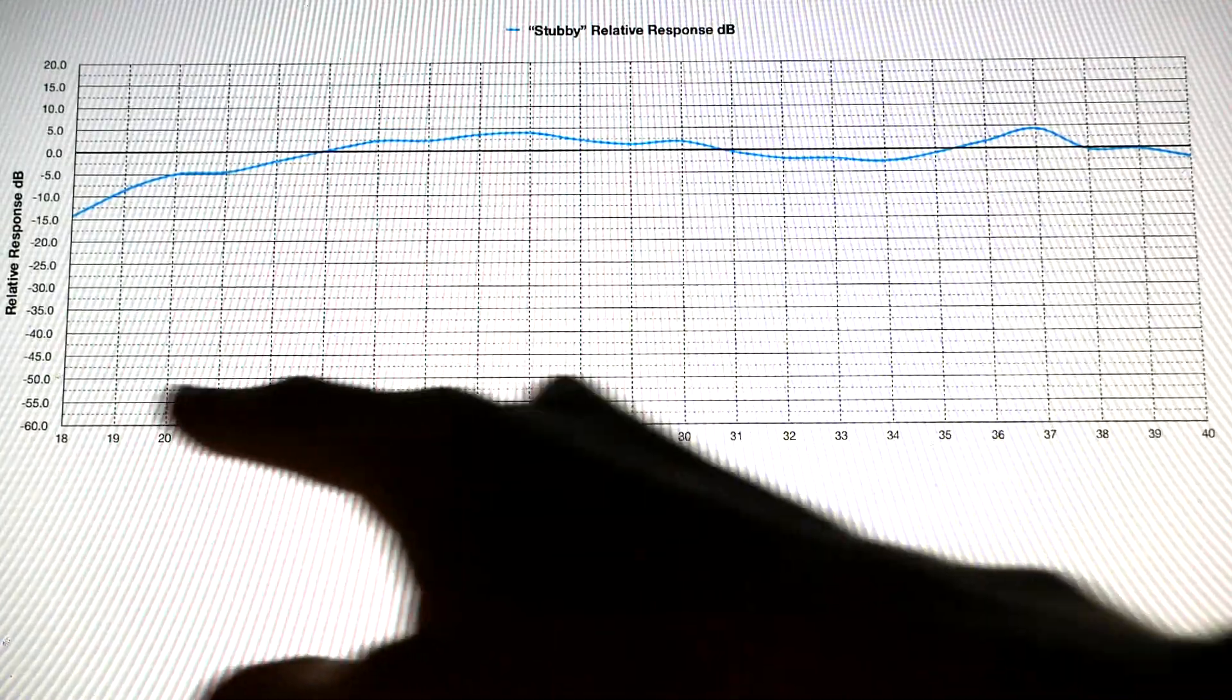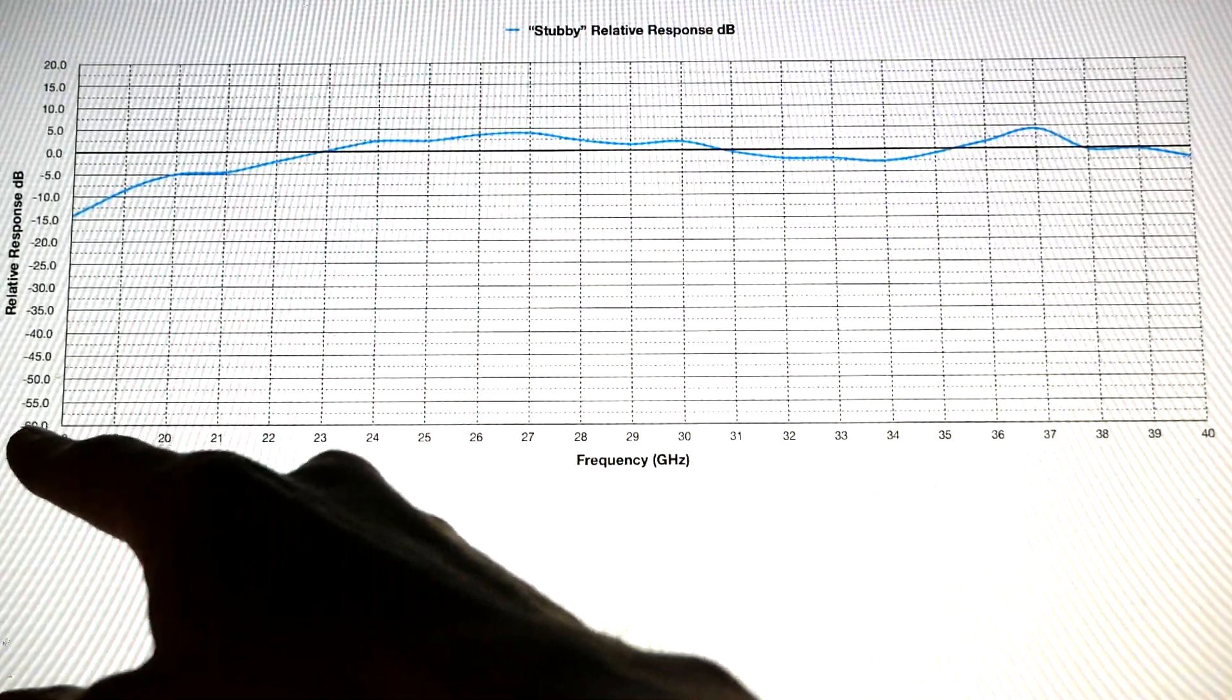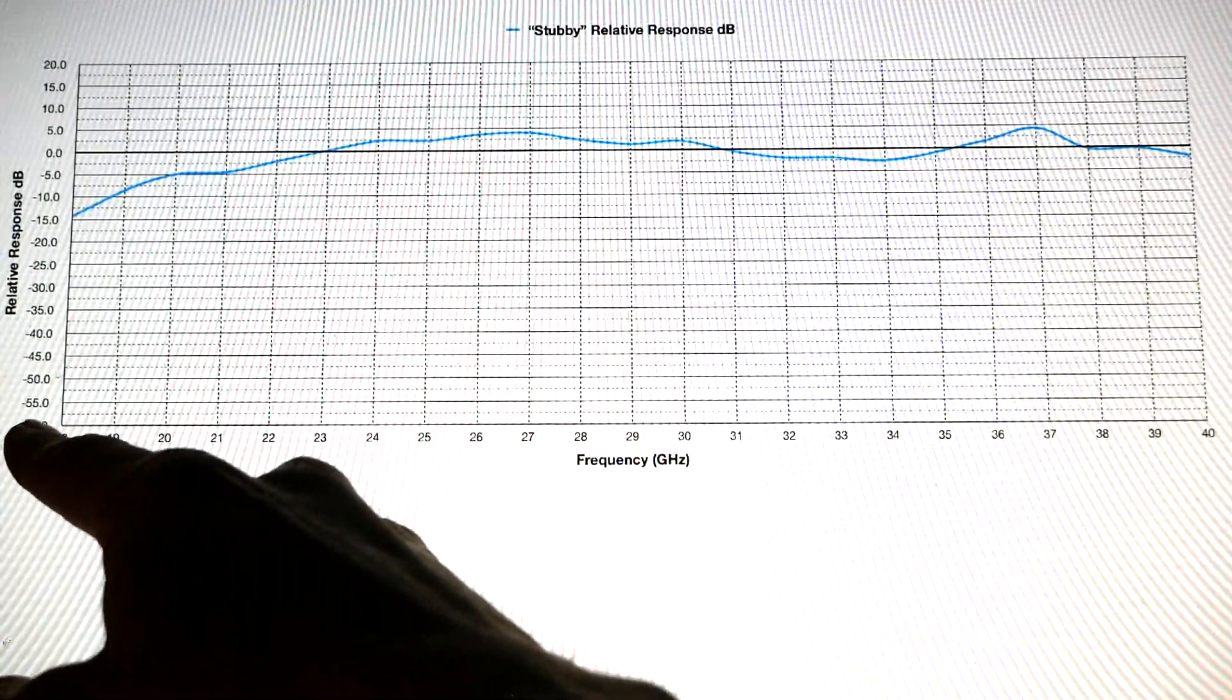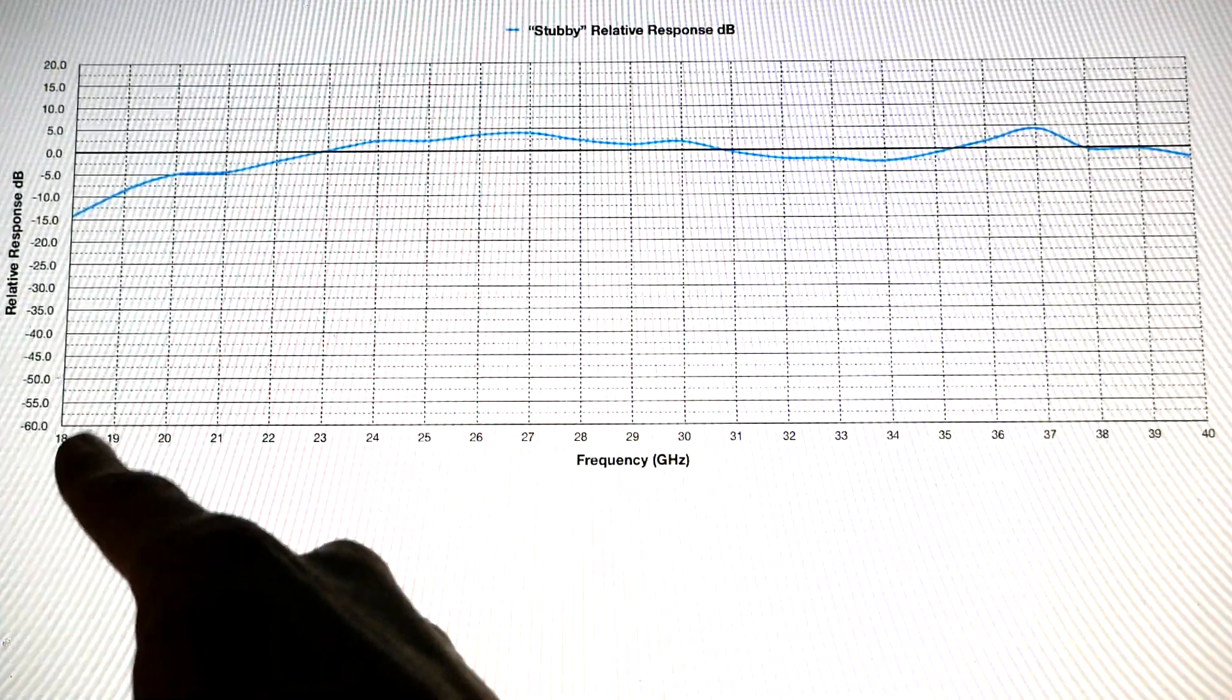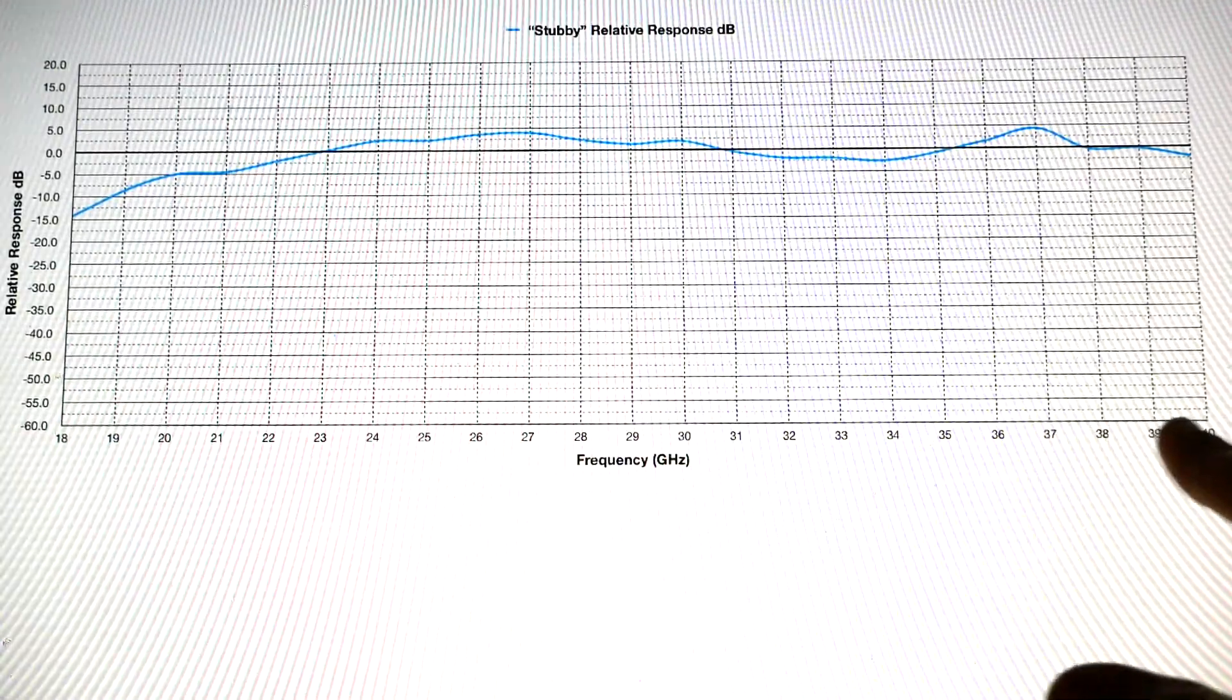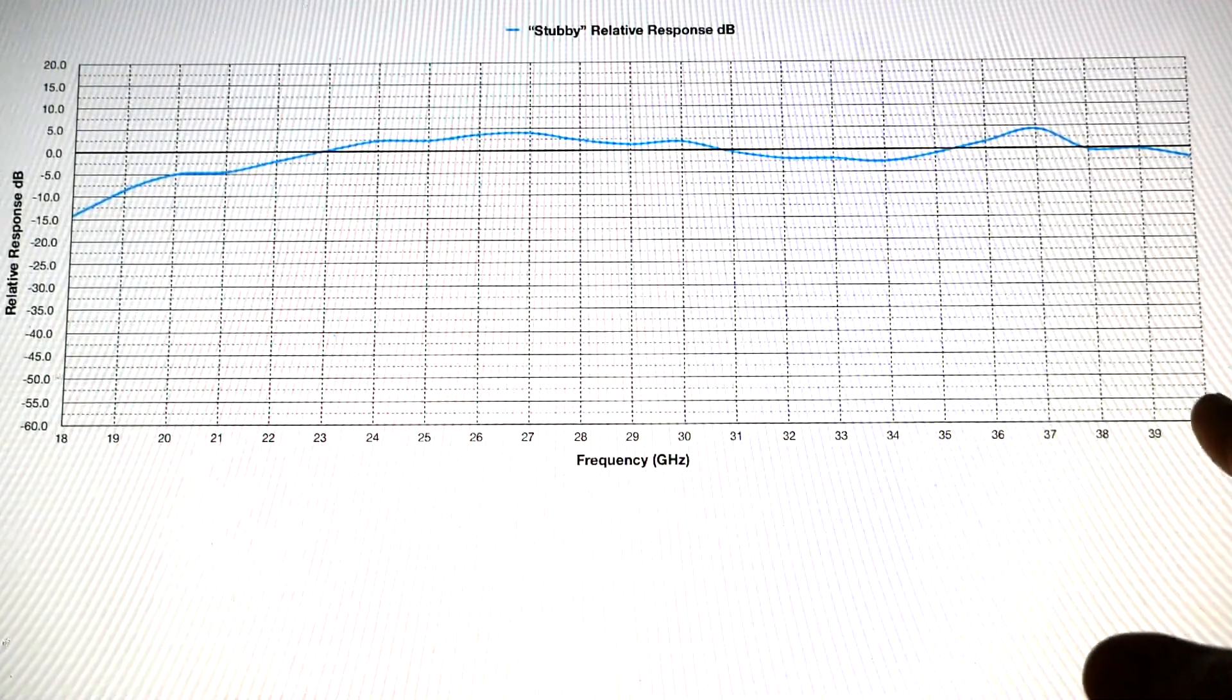And here's the resulting frequency response plot. So the x-axis has frequency, so our starting point was 18 gigahertz, and we're going in 1 gigahertz increments, 19, all the way to 40 gigahertz.